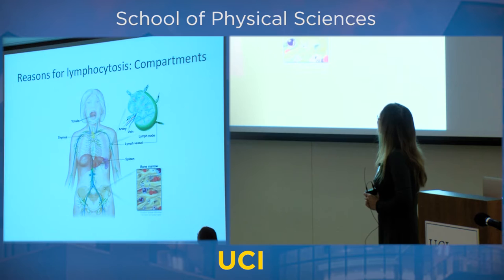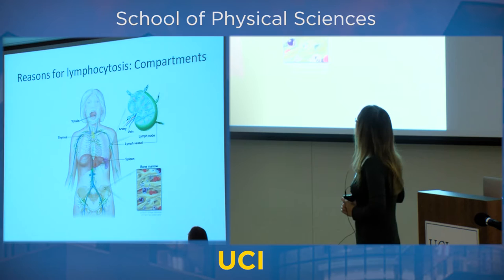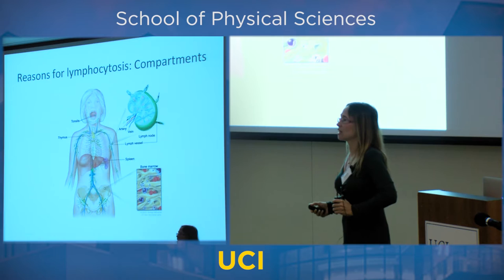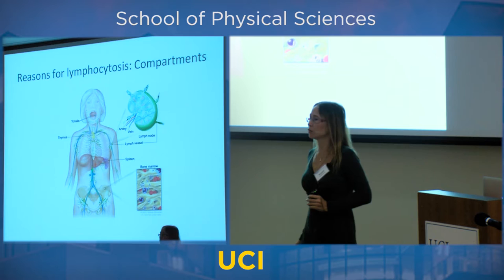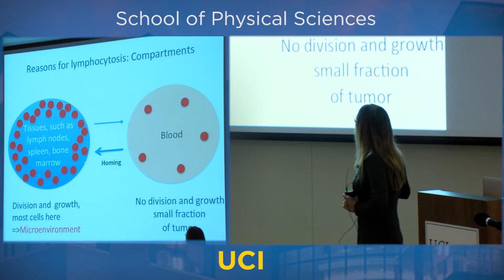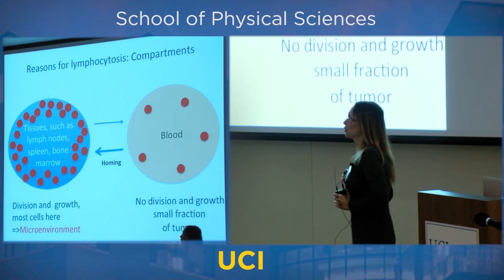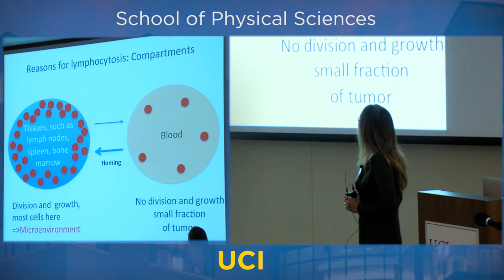This strange behavior was called lymphocytosis: a great increase in cancer cells before the decrease. The reason can be explained as follows: CLL leukemia lives not only in blood — it mostly resides in tissues like thymus, spleen, and bone marrow. It's hidden away, and only a small part of the cancerous cells make their way into blood. In tissue the cancerous cells are very comfortable — they divide and grow. In blood they don't divide; they just spill out and then come back.